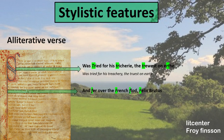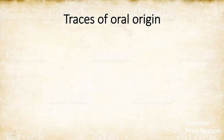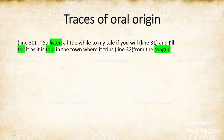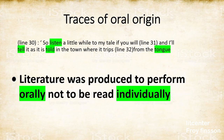Let's look at another example: "And fair over the French floor, the Felix Brotus." In this sentence, the 'f' sound is repeated four times. Just like Beowulf, Sir Gawain and the Green Knight has an oral origin. Traces of that oral origin can be found on line 30, where the poet says: "So listen a little while to my tale, if you will, and I will tell it as it is told in a town where it drips from the tongue." This shows us that literature was mostly used to be narrated rather than to be read individually.